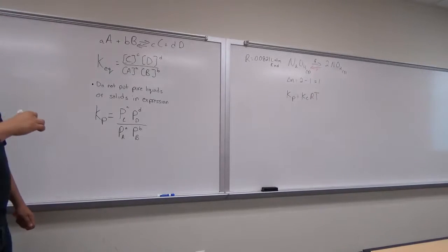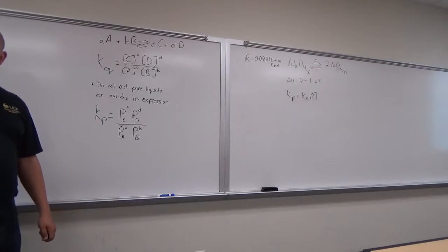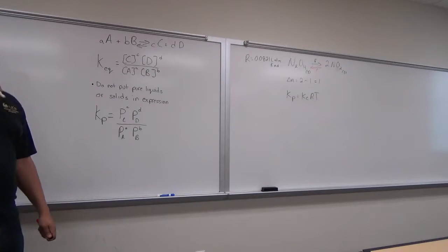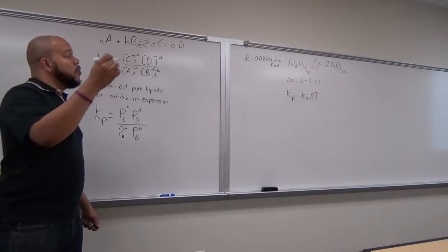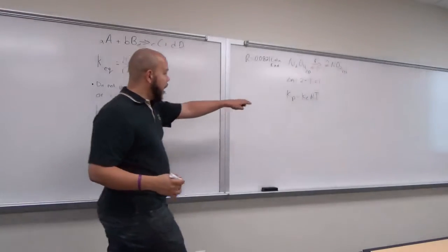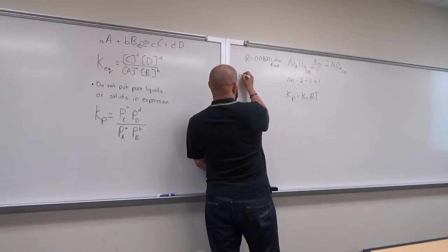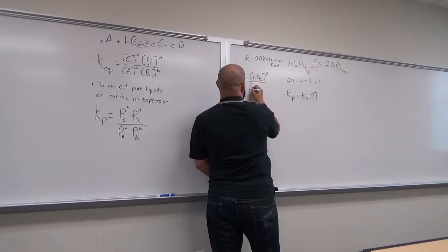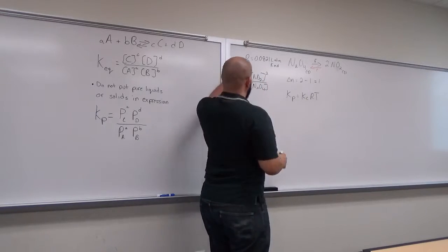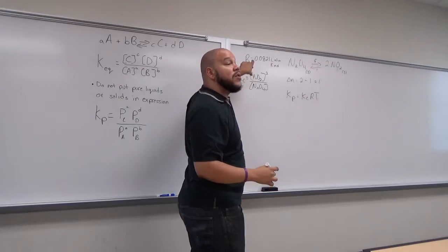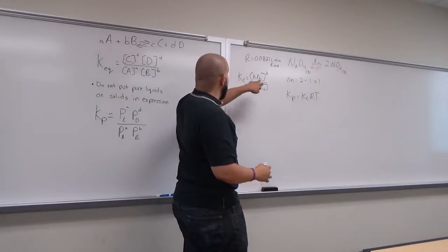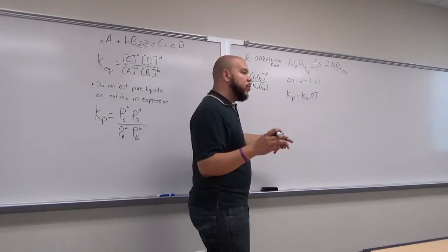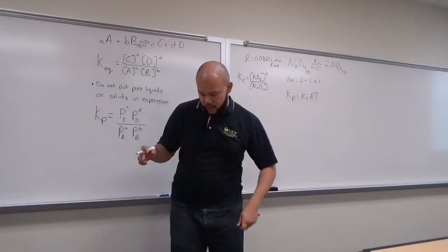If I gave you Kc, you would just plug it in. Or if I gave you concentrations at equilibrium, you would plug those in. Because if Kc equals [NO₂]² over [N₂O₄], and if I gave you these two equilibrium concentrations, you can solve for Kp. All you would need to know is the temperature and the gas constant.